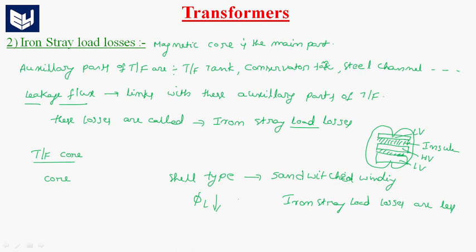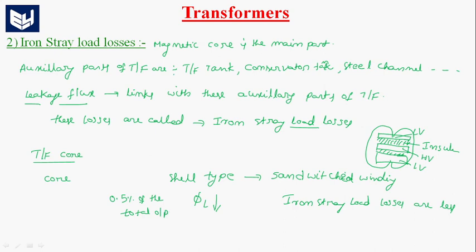Generally, these losses are 0.5% of the total output. This is about iron stray load losses and copper stray load losses. Thank you.